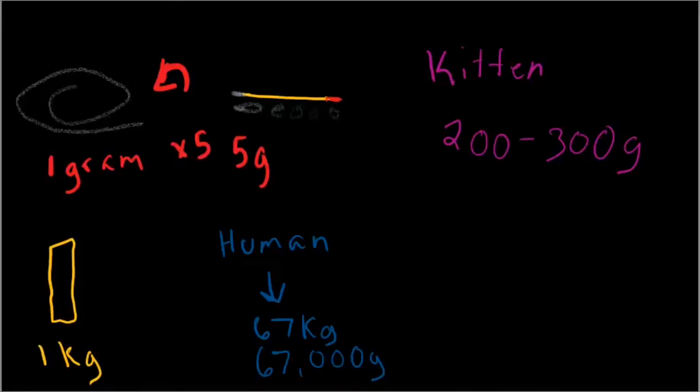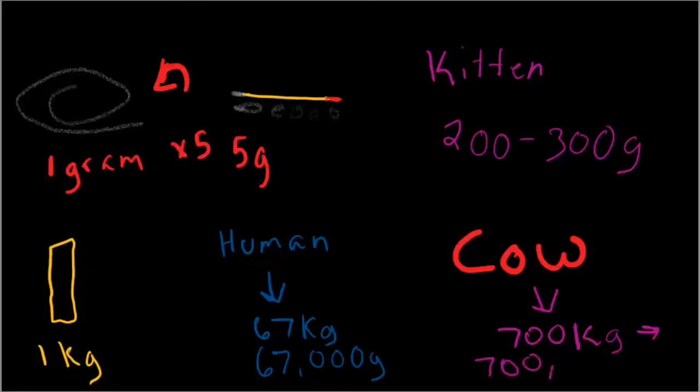67,000 grams. Now, let's get even bigger. Like, big, big. So, now we have a cow. A cow. I'm going to write this really thick because it's a cow. Okay. So, a cow roughly weighs about 700 kilograms. And, that's a lot. And, converting that into grams? Well, that is 700,000 grams.